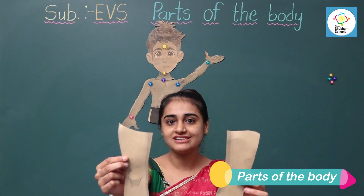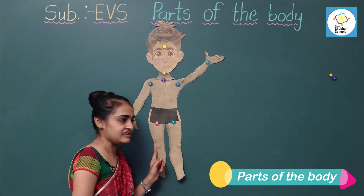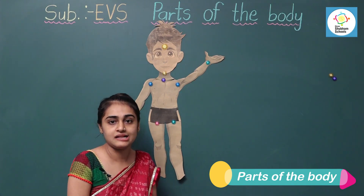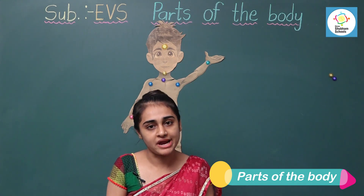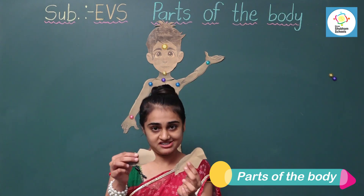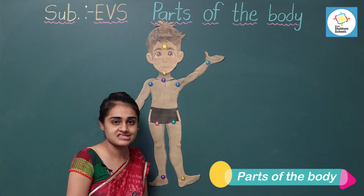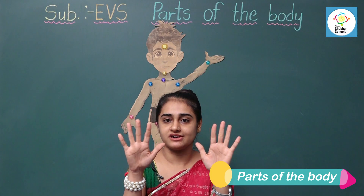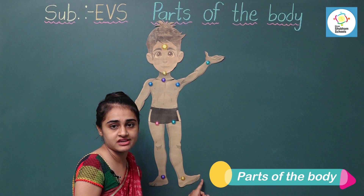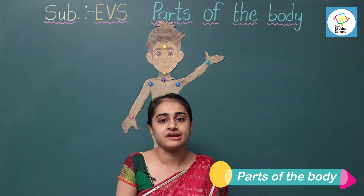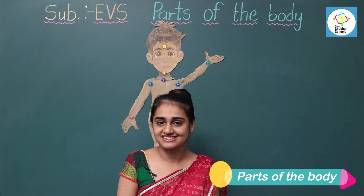These are our legs. In legs, these are knees. Knees help to bend the legs. Next is feet — these are our feet. Next are toes. Just like hands have fingers and thumbs, legs have toes. With the help of toes and feet, we can walk, dance and run.